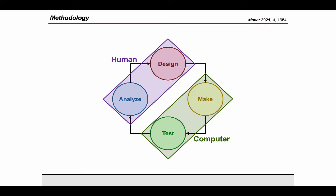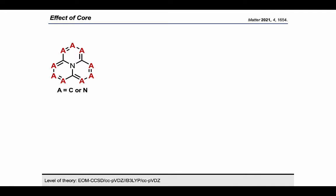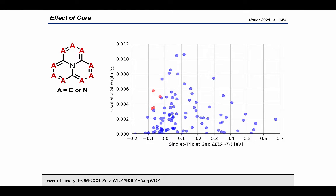We started by investigating the properties of all permutations of nitrogen-substituted azaphenalenes as depicted in the scheme to the left. The corresponding property map is shown to the right. The abscissa represents the singlet-triplet gap. The ordinate shows the oscillator strength. The ideal molecule we're looking for has a negative singlet-triplet gap and a high oscillator strength. So the ideal molecule is in the top-left corner of this diagram.